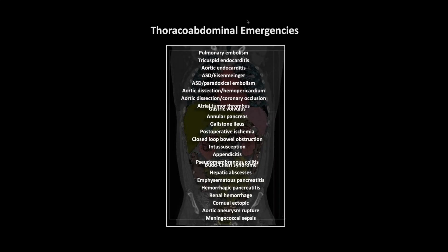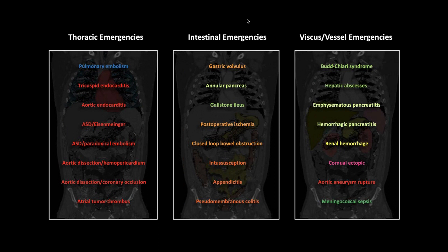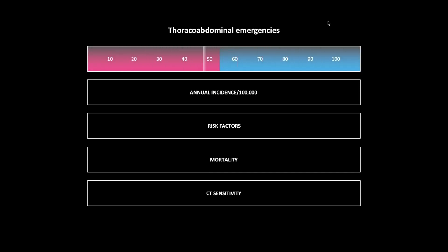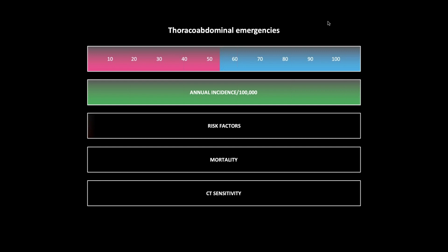Thoraco-abdominal emergencies. I like to color-code things by organ. The first group covers thoracic emergencies, the next group intestinal emergencies, and lastly viscous and vessel emergencies. I'll note the typical age range and gender distribution — pink for female, blue for male, white for equal in both genders.